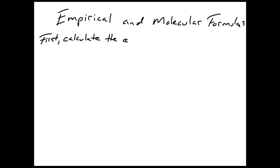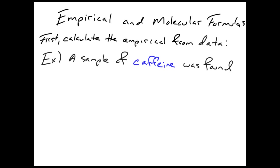First, you've got to calculate the empirical formula from the data you're given. Sometimes you're given data directly in moles and you can just plug in your subscripts. Other times you're given data in grams and you need to first convert to moles and then plug in your subscripts. And sometimes you're given data in terms of the mass percents of a given compound.